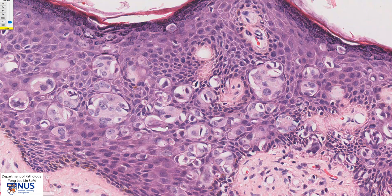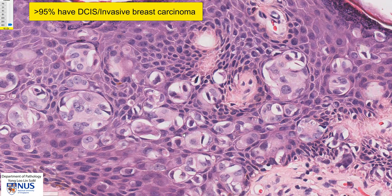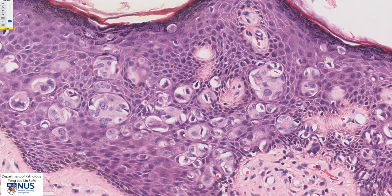Most cases of mammary Paget's disease will also have underlying DCIS or invasive breast carcinoma. So it's very important, if a diagnosis of Paget's disease is made, to look for underlying cancer.